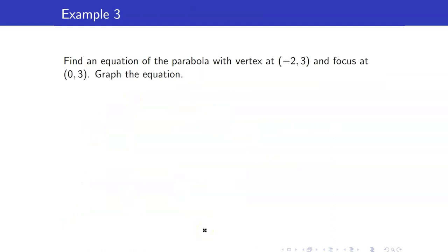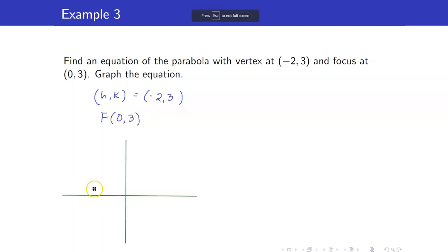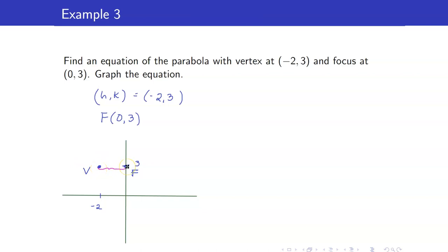Next, find the equation of a parabola with vertex at (negative 2, 3), so we already have our h and k: that's negative 2 and 3. And focus at (0, 3). Again, let us draw what is given. This is our vertex at (negative 2, 3) and our focus at (0, 3). This tells us the value of a. A is the distance between the vertex and the focus, and this distance here is equal to 2. Hence, a is equal to 2.